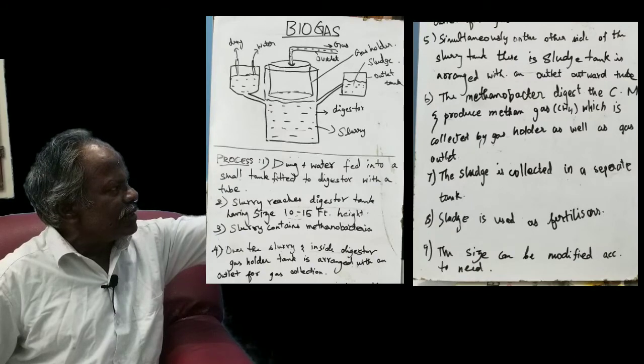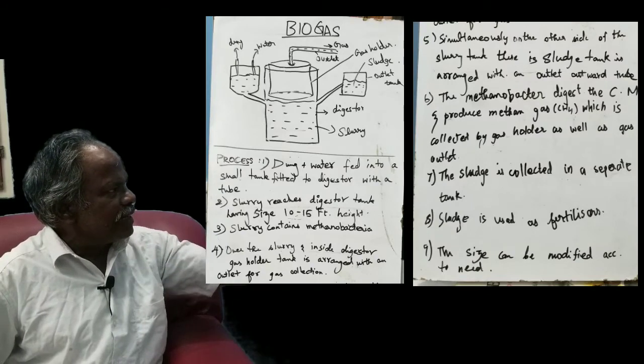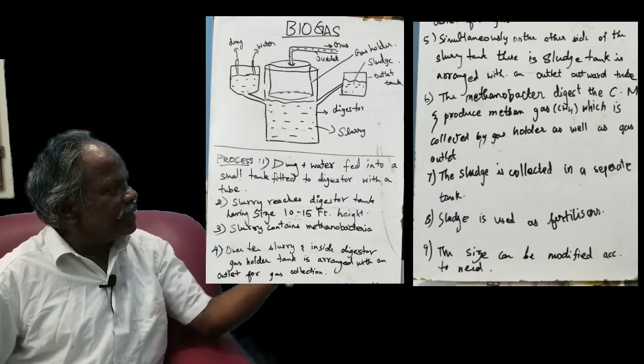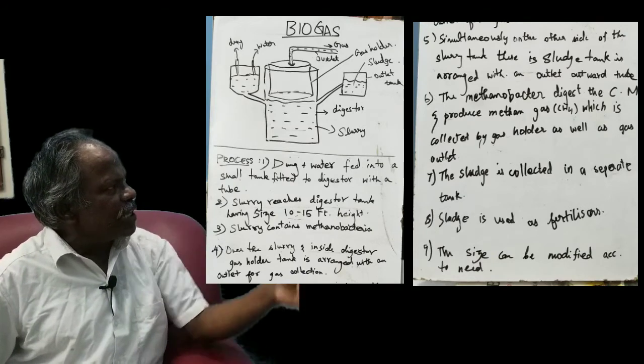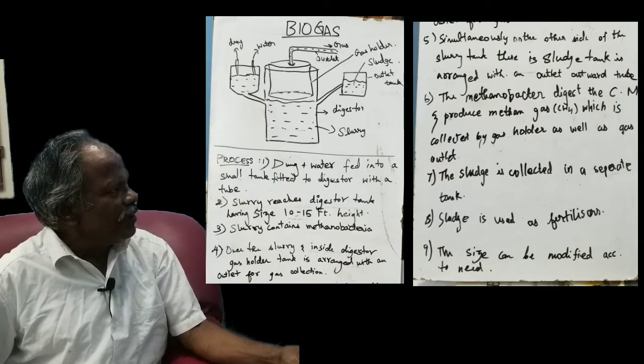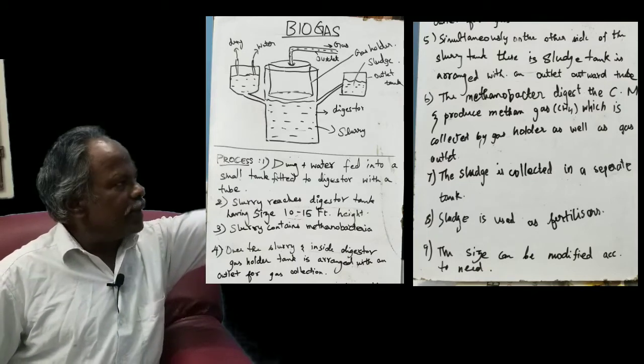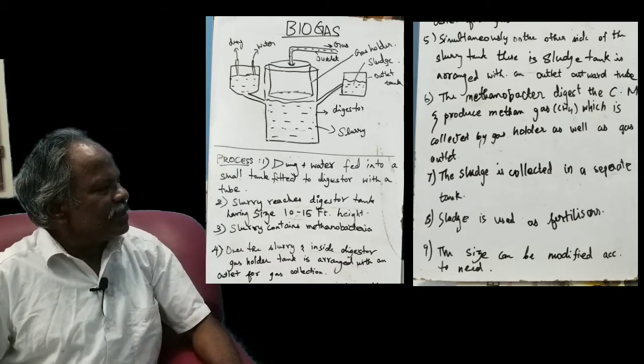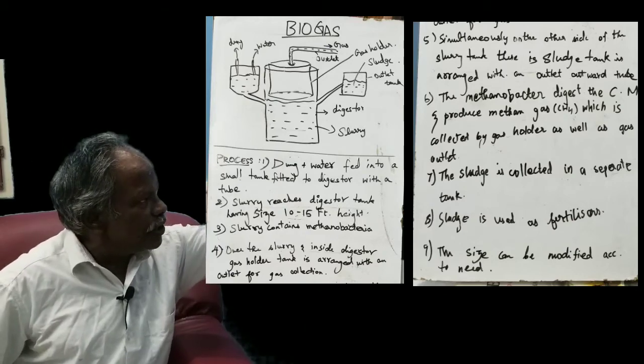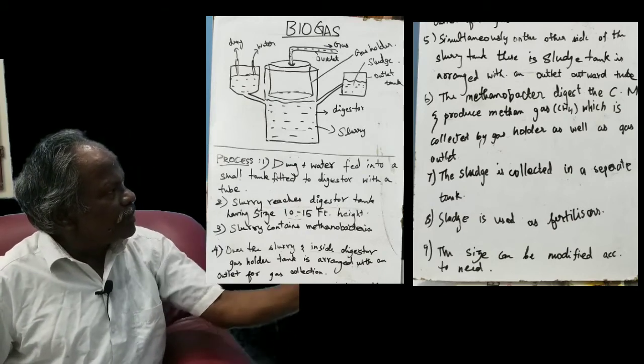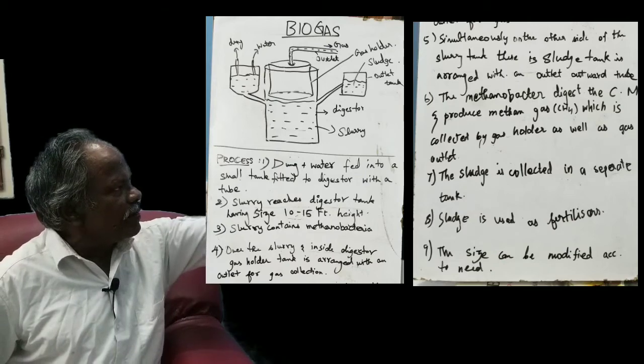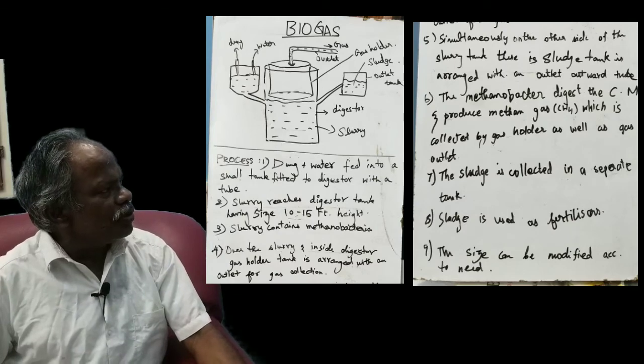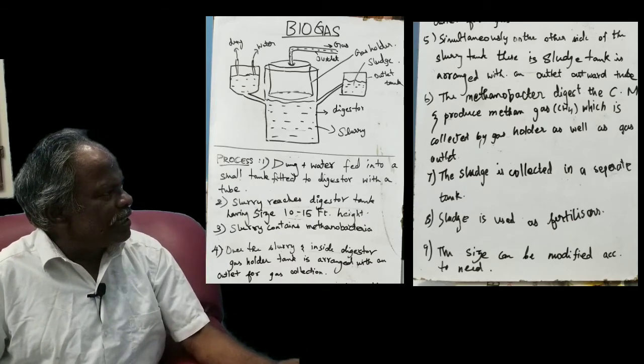In the connected tank, we are pouring the cowdung and water to make it a slurry. The slurry is fed into the digester tank. Over the digester tank, a gas holder tank is arranged which floats over the slurry. The gas holder is connected to a gas outlet, and on the opposite side, a sludge tank is also arranged with a duct.